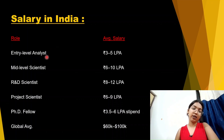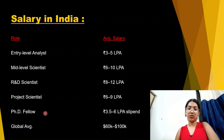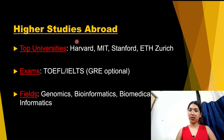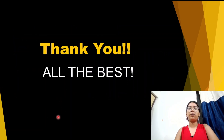Regarding salary in India: entry-level analysts can expect 3–5 LPA, mid-level scientists 6–10 LPA, R&D scientists 8–12 LPA, project scientists 6–9 LPA, and PhD fellows receive a stipend of 3.5–6 LPA. If you have enough knowledge and interest in studying further, you can also apply abroad to top universities in excellent fields such as genomics, bioinformatics, and biomedical informatics.